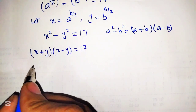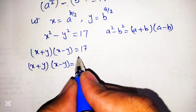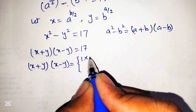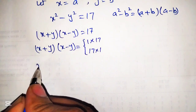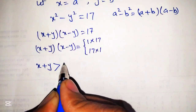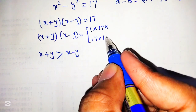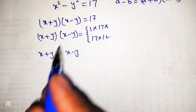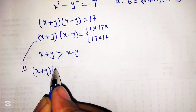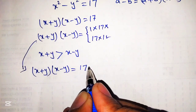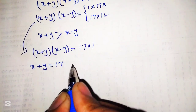Fortunately we have only two factor pairs. So we can write x plus y into x minus y equal to 17. The factor pairs of 17 are 1 times 17 and 17 times 1. Since x plus y is greater than x minus y, the factor pair 1 times 17 is rejected, and the correct assignment is x plus y equals 17 and x minus y equals 1.